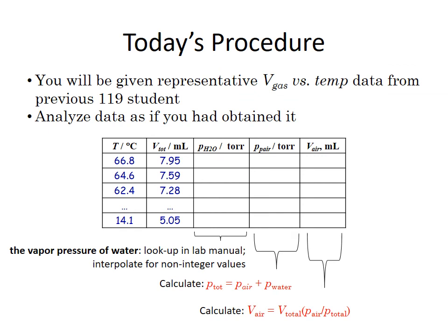Here's how we're actually going to do today's lab. What you are going to be given on the report sheet is representative V gas versus temp data from a previous 119 student. So this is from the report sheet that you're going to download. You'll see this sort of dummy data placed into that file. Once you have that dummy data, all you're going to do is analyze it as if you had obtained it. And so there's really three components here. There's three columns that you have to fill out.